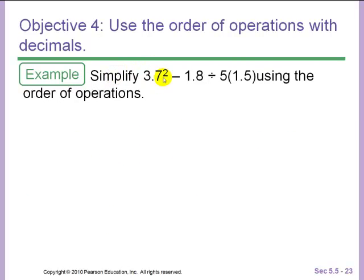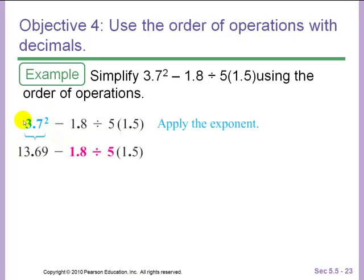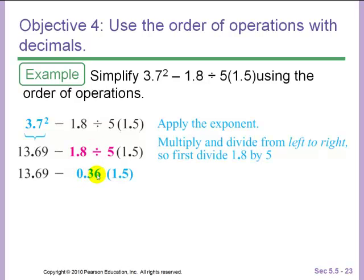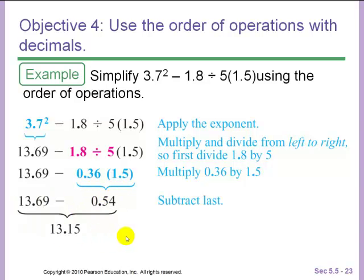And lastly, simplify 3.7 squared minus 1.8 divided by 5 parentheses 1.5 using the order of operations. We have parentheses, but it's just here for a multiplication, so we'll start with exponents instead. 3.7 squared is 13.69. Now we have a subtraction, a division, and a multiplication. Division and multiplication happen together from left to right. Since the division is on the left, you must do that first. 1.8 divided by 5 will give you 0.36. Now we'll multiply, we get 0.54. And lastly, subtract, and you get 13.15. Again, do all of your actual arithmetic to the side so that it does not mix up your order of operations.